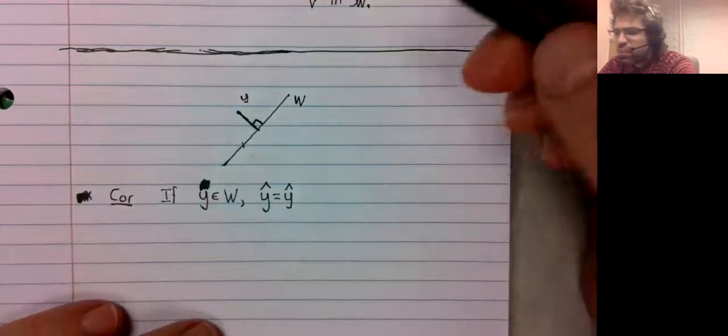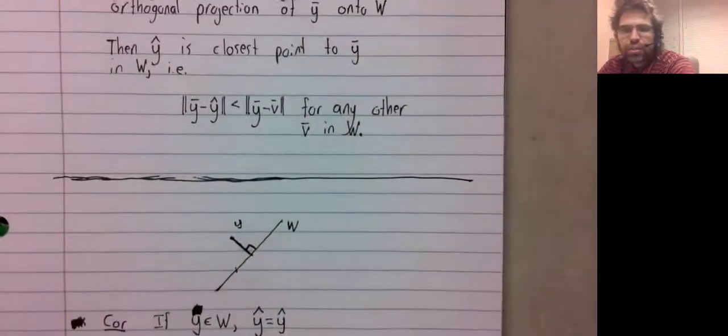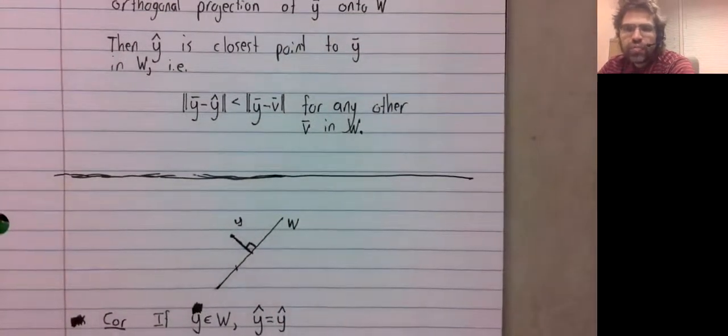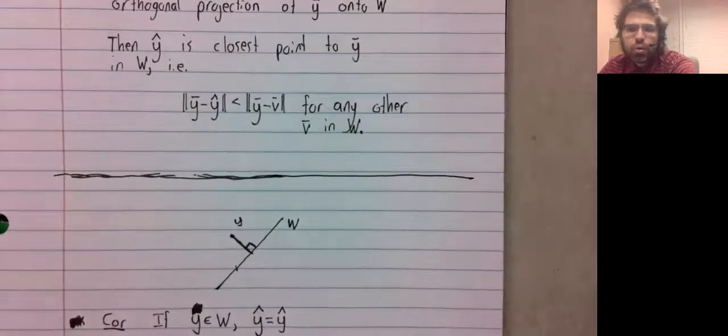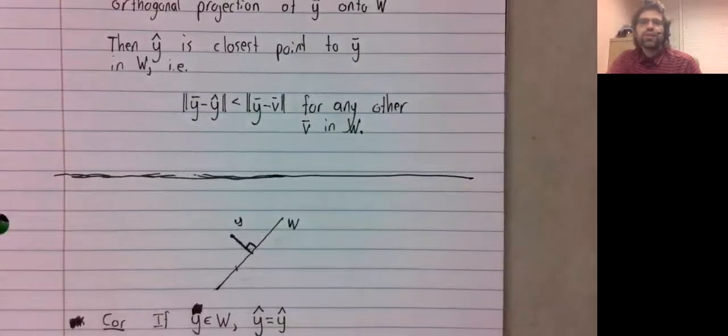And that comes immediately from this theorem and from the fact that the distance from Y to Y is zero, and it's impossible for any distance to be smaller than that.